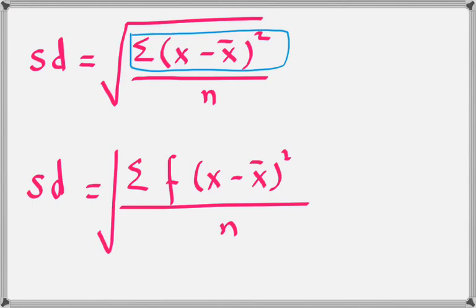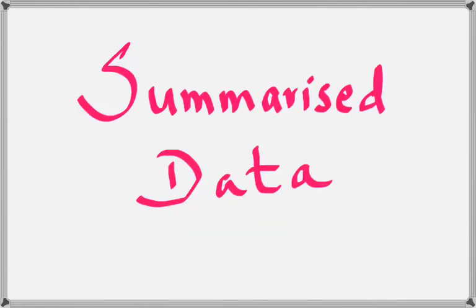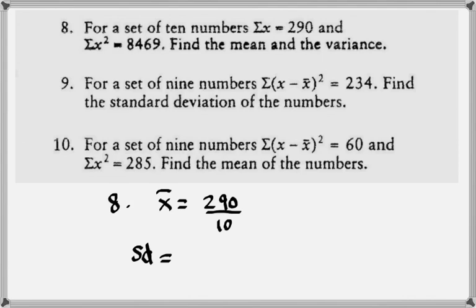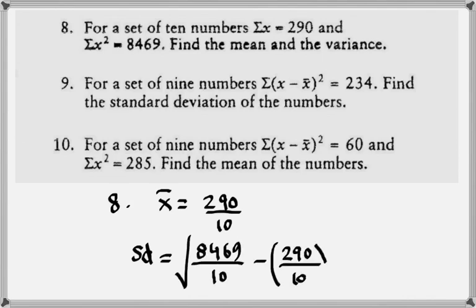Similarly, for the frequency distribution, the alternative formula for standard deviation is Σf(x − x̄)². Now if we are looking at summarized data, look at the question at the top: for a set of 10 numbers, n = 10, Σx = 290. Whatever the original data was is lost — all those values have been added up. Sum of x is 290, sum of squares of x (Σx²) is 8469.